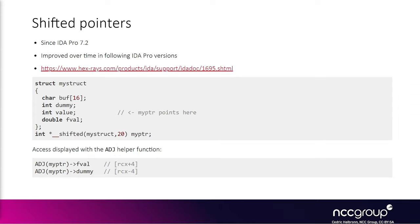There is a concept of shifted pointer in IDA that solves the negative offset problem we saw when decompiling the vulnerable function. In the vulnerable function, we saw negative offsets when an address to a list entry element inside a structure was retrieved. The C code was subtracting some offset to go back to the beginning of the structure before it could index the other elements from the actual base.